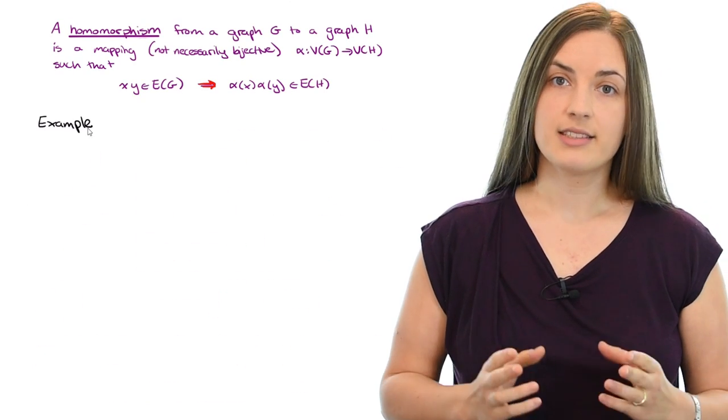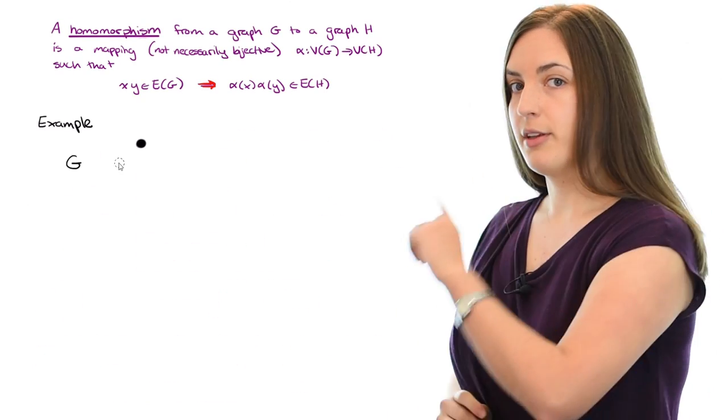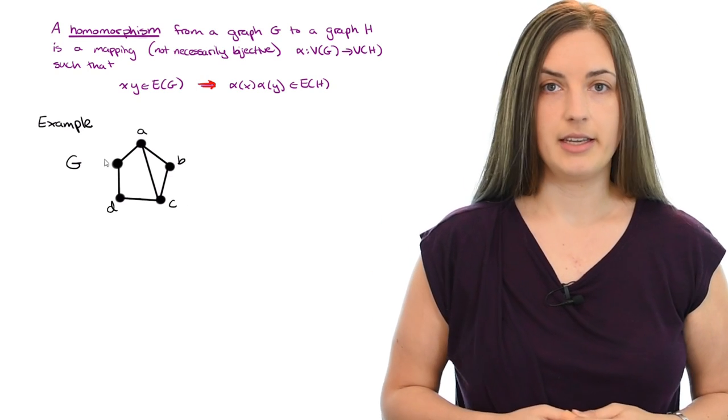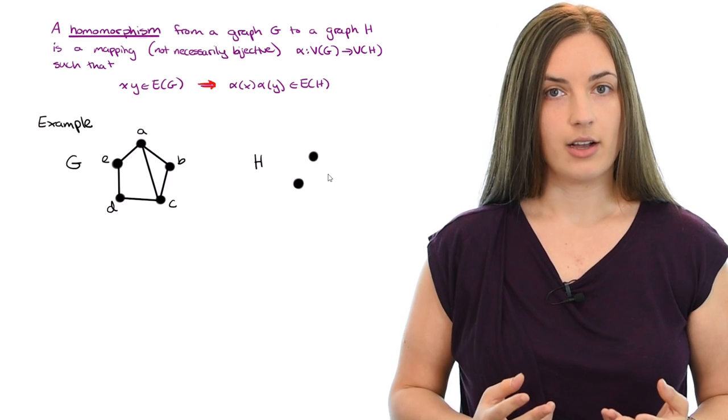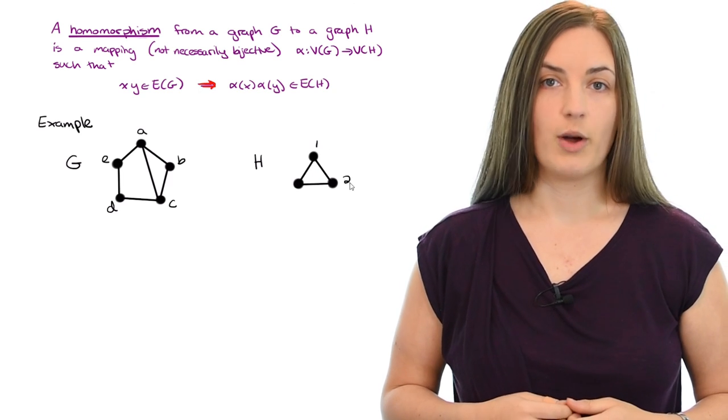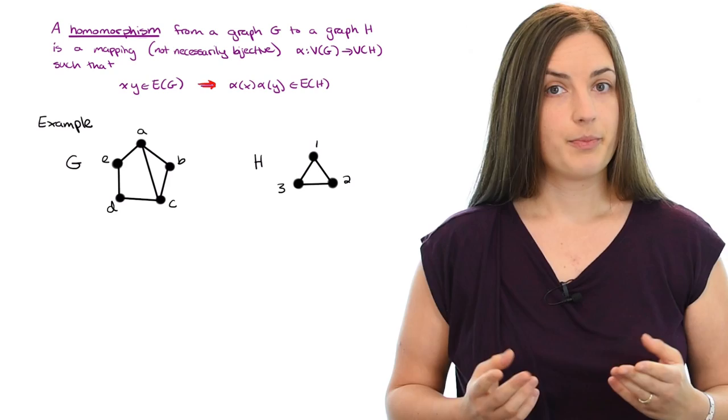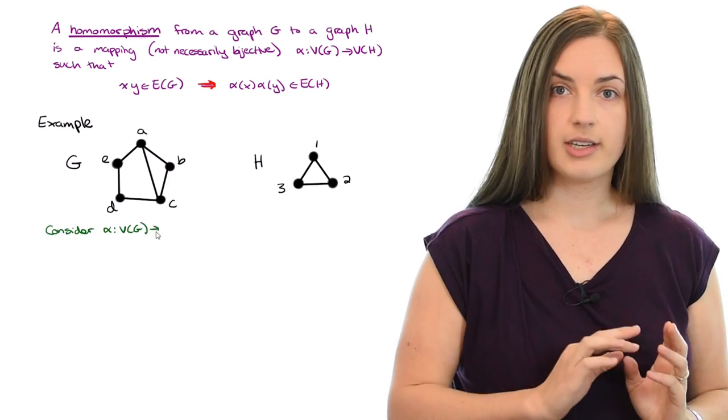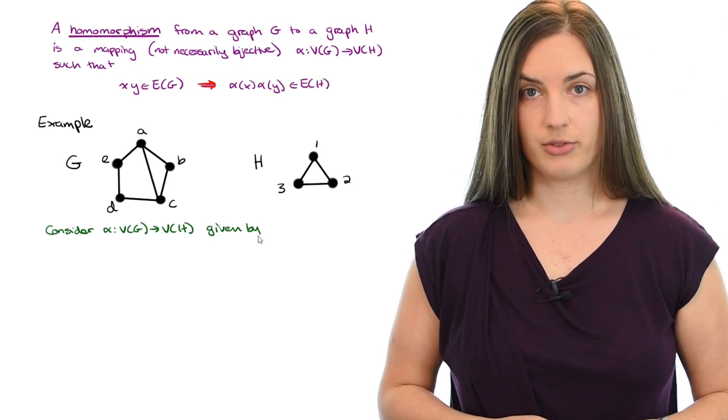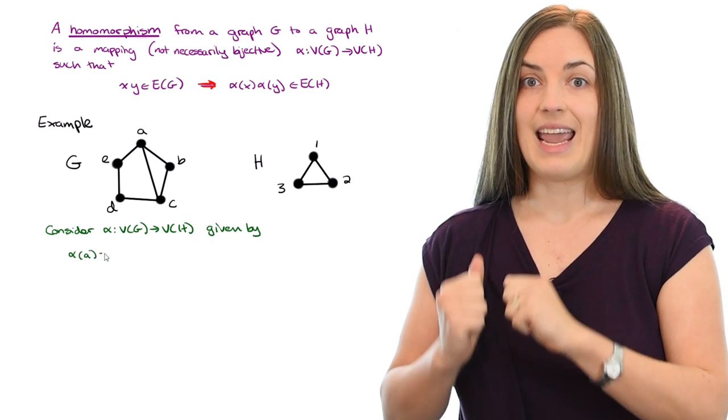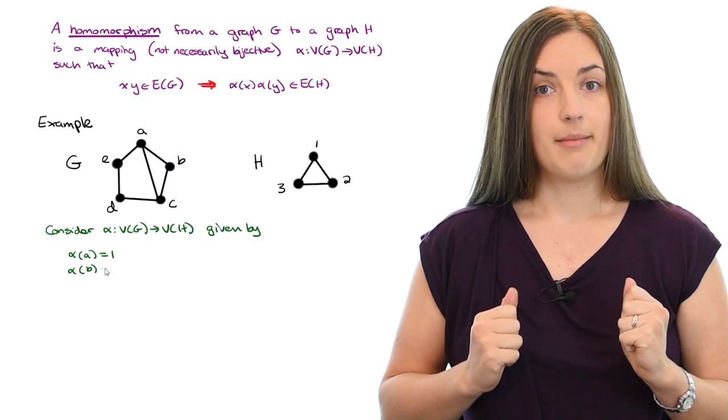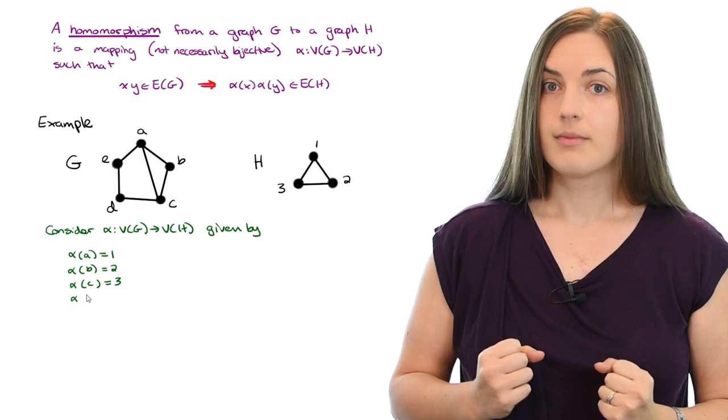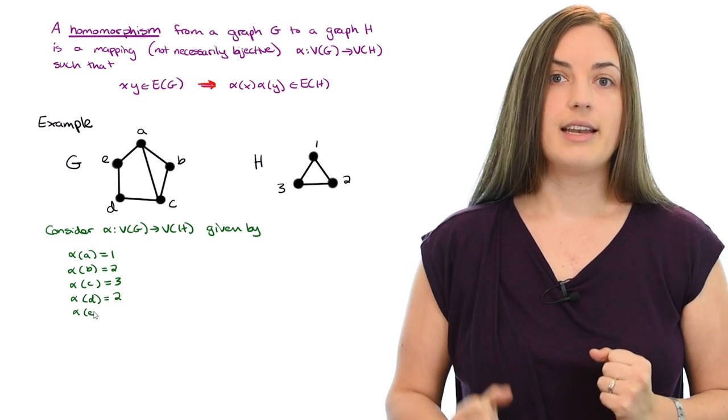In a second example, let's take our graph G to be this graph on five vertices, which we'll label ABCDE and our graph H to be the triangle and we'll label the vertices 1, 2, 3. Now consider the mapping from the vertex set of G to the vertex set of H given as follows. The mapping alpha maps A to 1 and it maps B to 2, C to 3, D to 2, and E to 3.